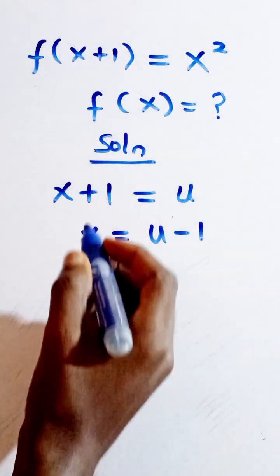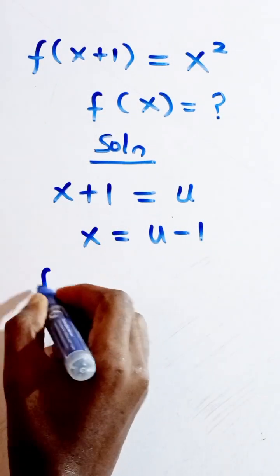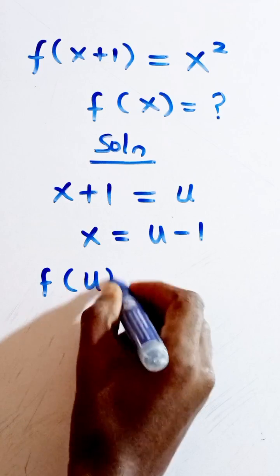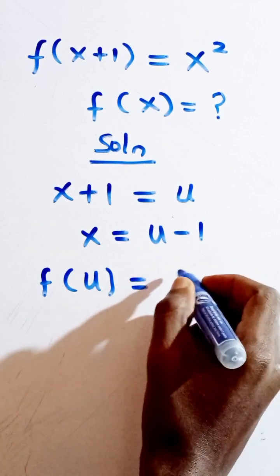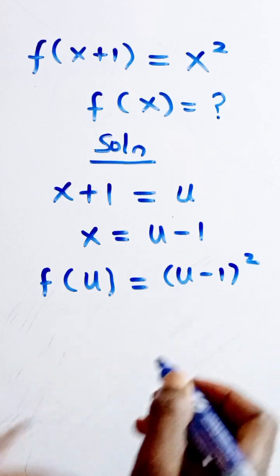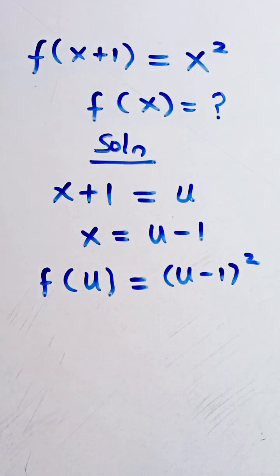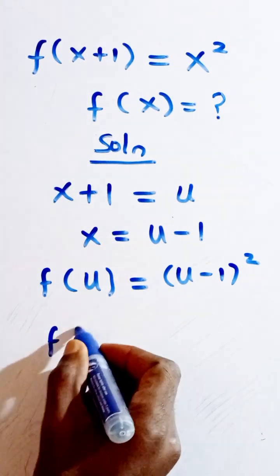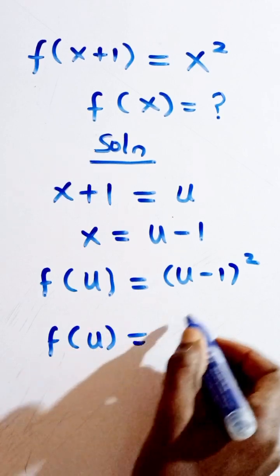Then we substitute again and we have f(u) equals, instead of x we have (u - 1) squared. So having (u - 1) squared, then we have this as f(u) equals.